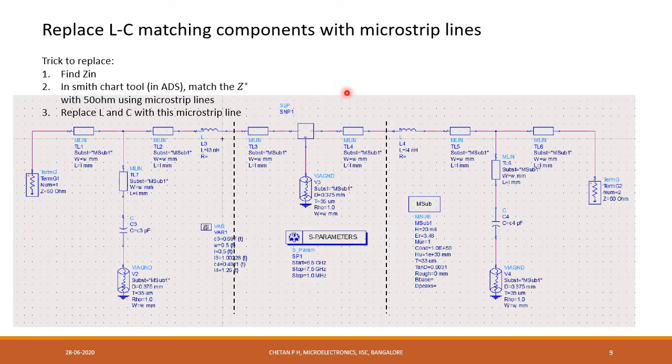After simulating using LC lumped ideal LC components, we need to replace them with the microstrip lines. In order to do that, we can use a simple trick here. What you can do is find Z in. Z is nothing but the impedance seen at the input side and the output side. These two are different components. So, in order to replace the input LC components with the microstrip lines, we need to find the Z here and then match the Z star with the 50 ohm using microstrip lines and then replace these LC components, the whole of these components with the microstrip line. Similarly, we can do with the output side. This will give the exact width and length of the microstrip lines.